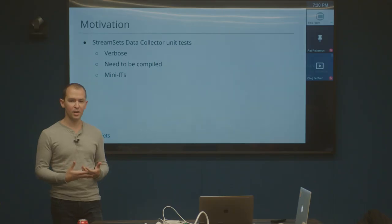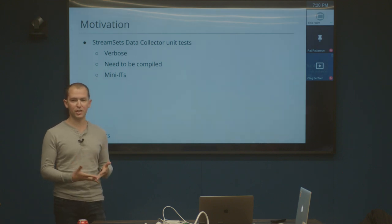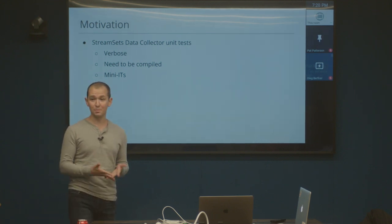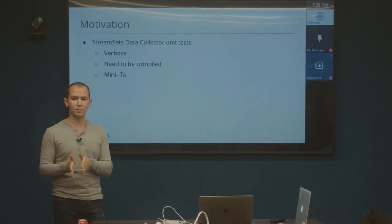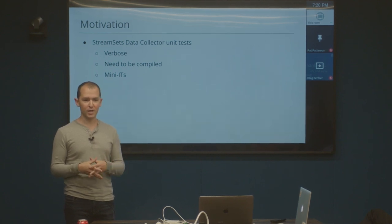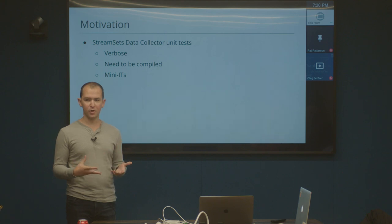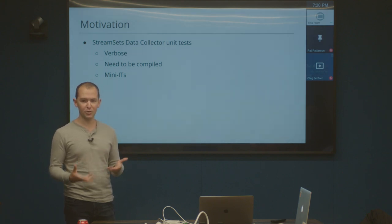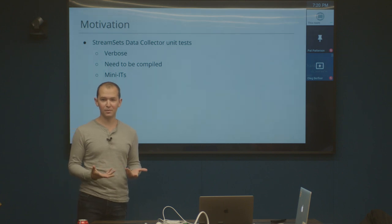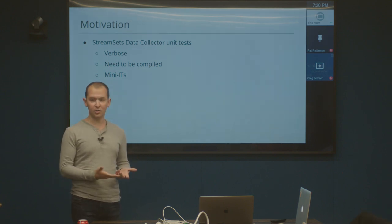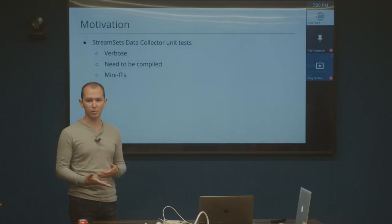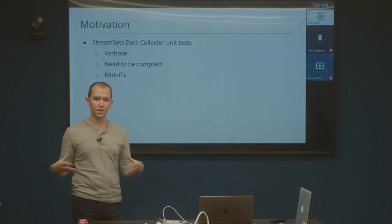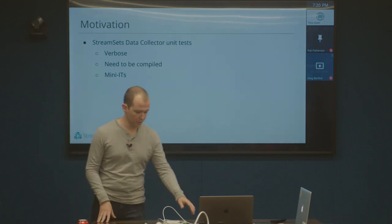And the last one — this is something that anyone who's looked at our source code knows — for a long time we actually had sort of integration tests that lived with our unit tests. We call them mini-ITs. One of the biggest motivations of creating a new test framework for end-to-end testing was these mini-ITs, because what they would do is actually spin up miniature versions of the systems we were trying to connect to — like a mini Hadoop cluster. Anyone from the Hadoop world knows these Java projects that spin up mini versions tend to not be very reliable, very flaky. So we saw a lot of that flakiness internally and decided, is there something we could do for a different type of testing — not unit testing, but really that end-to-end user testing of pipelines? And that's where we came up with the StreamSets Test Framework.